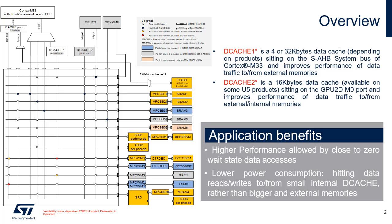DCache1 is placed on the Cortex-M33 SAHB bus and caches only the external RAM memory region, OctoSPIs, HSPI, and FSMC. By placing a bus matrix demultiplexing node in front of DCache1, SAHB bus memory requests addressing the SRAM region or peripheral region are routed directly to the main AHB bus matrix and DCache1 is bypassed. The concurrence between DCache1 accesses to external memories and core accesses to internal SRAMs also improves the overall performance of the microcontroller.